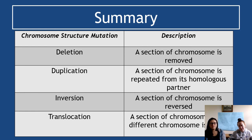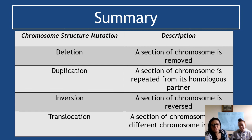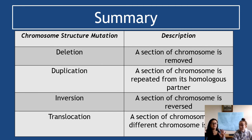To summarize the four chromosome structure mutations: deletion — a section of the chromosome is completely removed; duplication — a section is repeated from its homologous partner; inversion — a section is reversed or flipped; translocation — a section from a non-homologous chromosome is added. Adding these to the two protein mutations, splice site mutations, and three point mutations gives a total of 10 different mutations you need to be able to describe and identify.